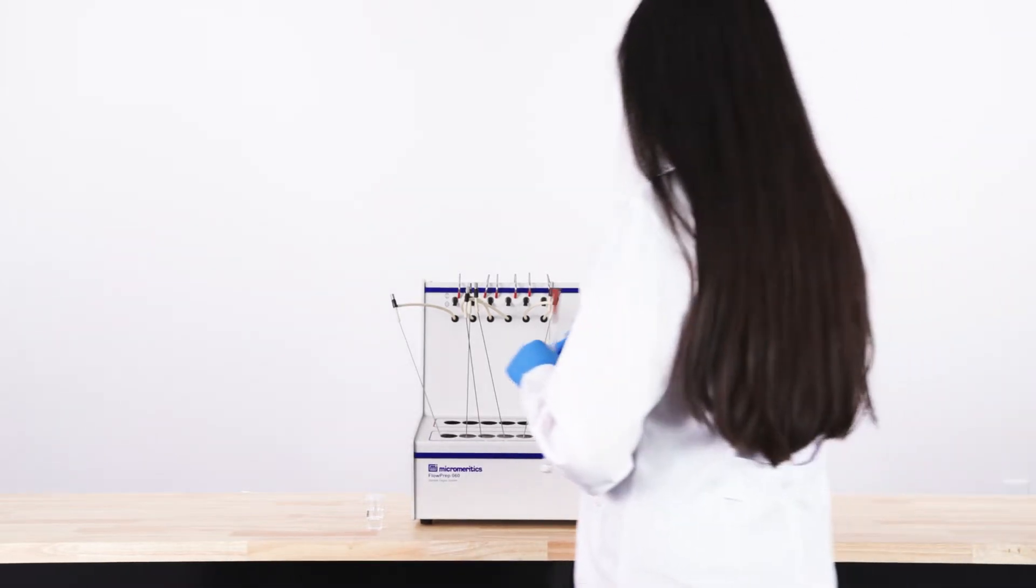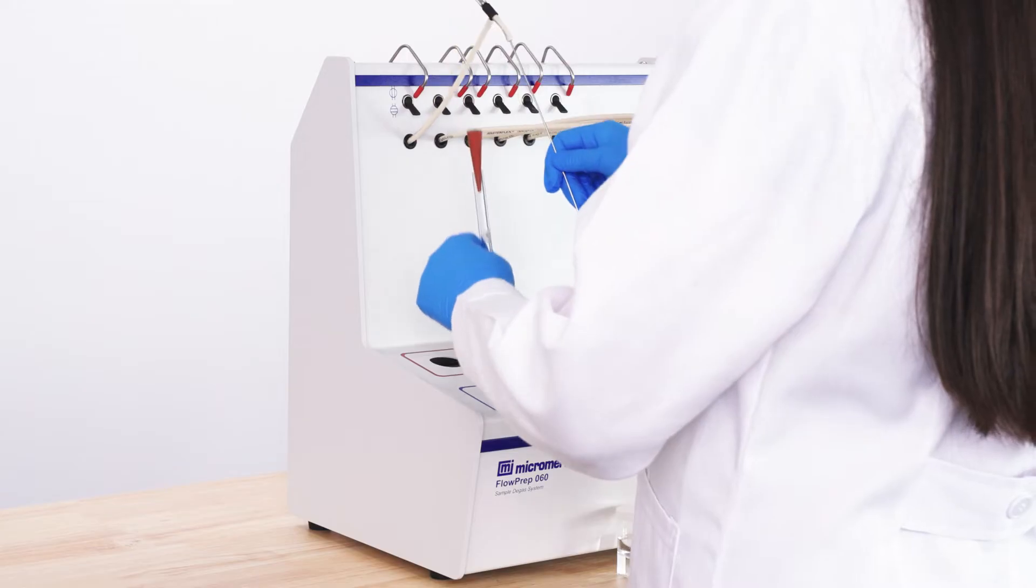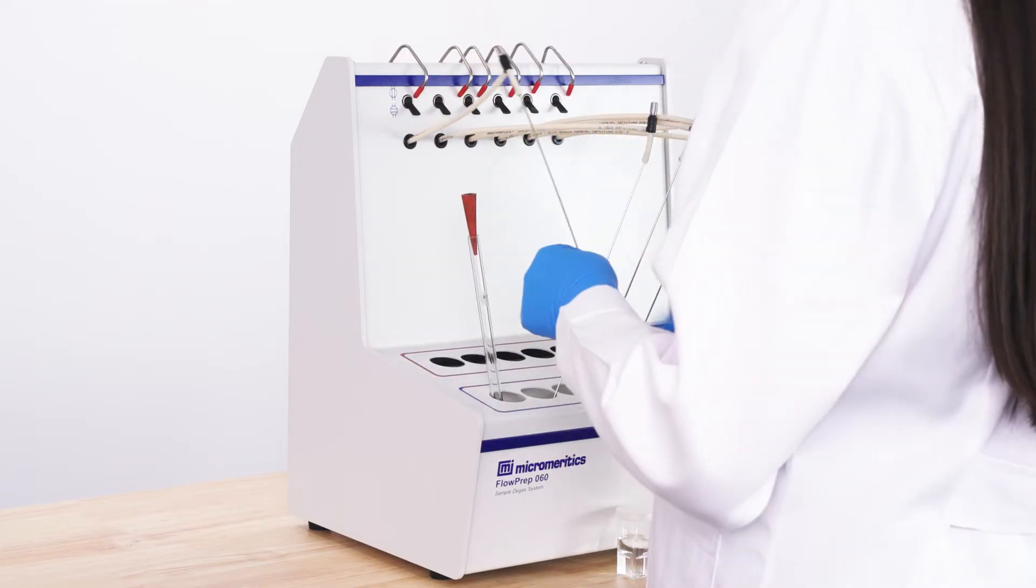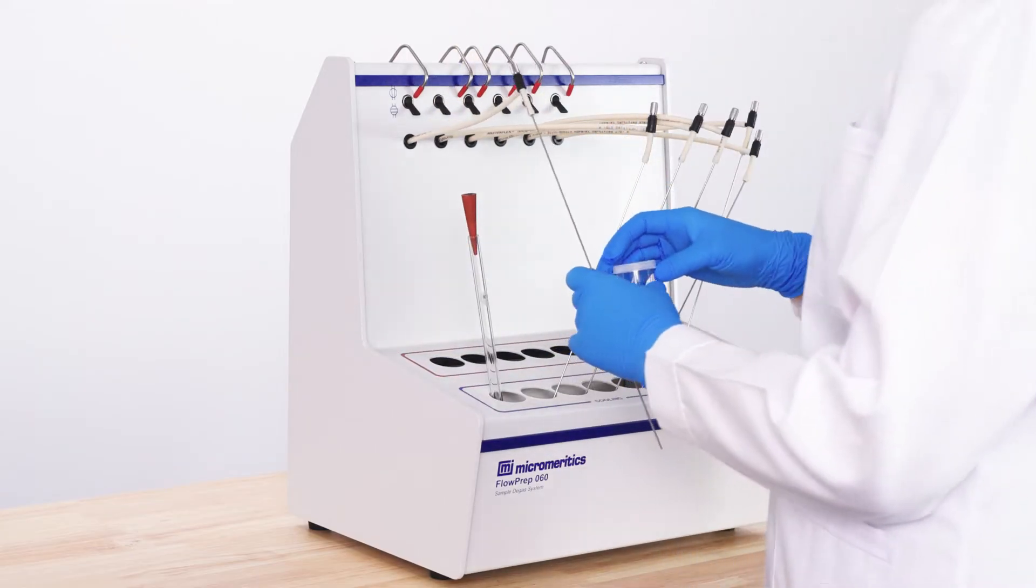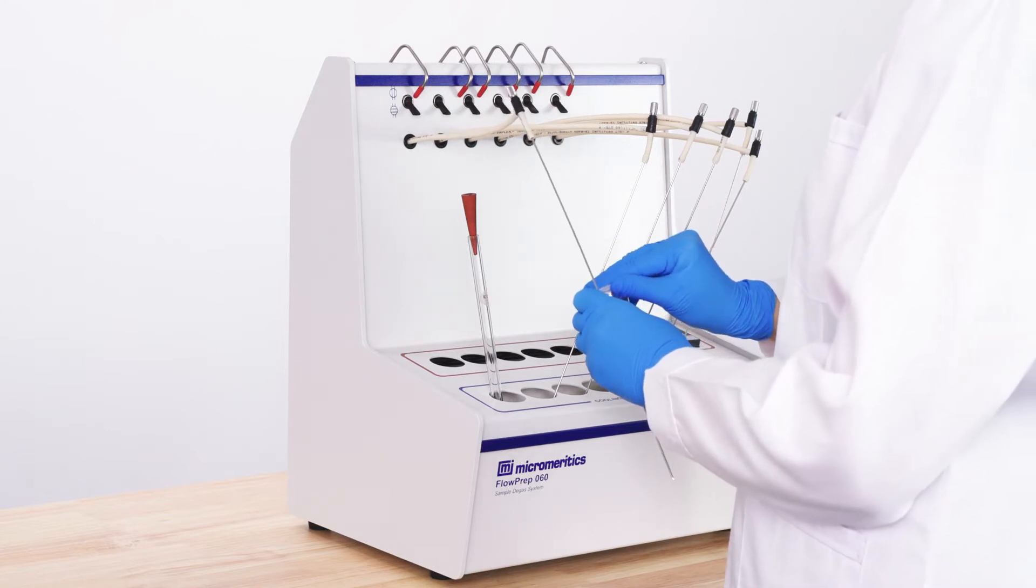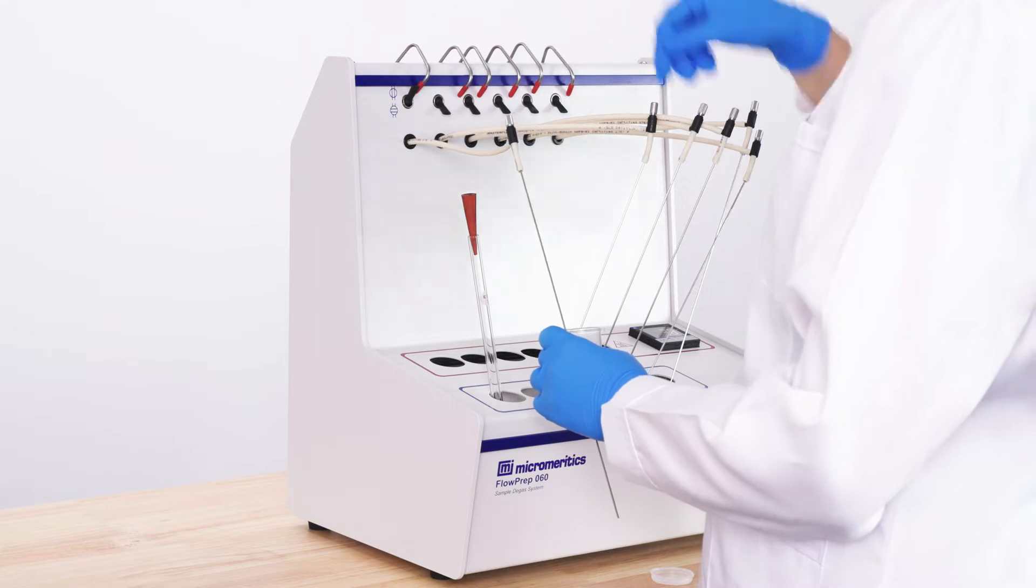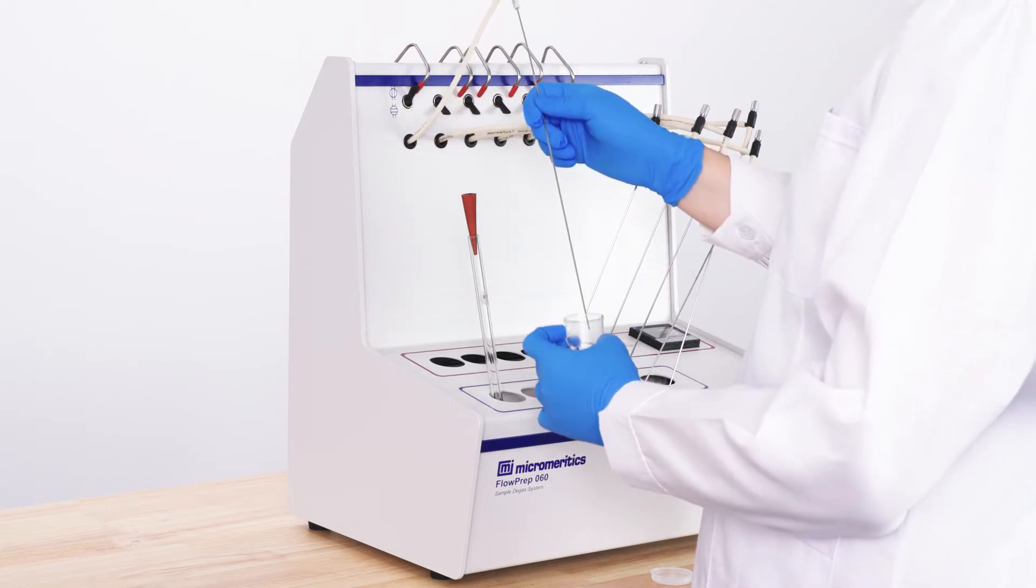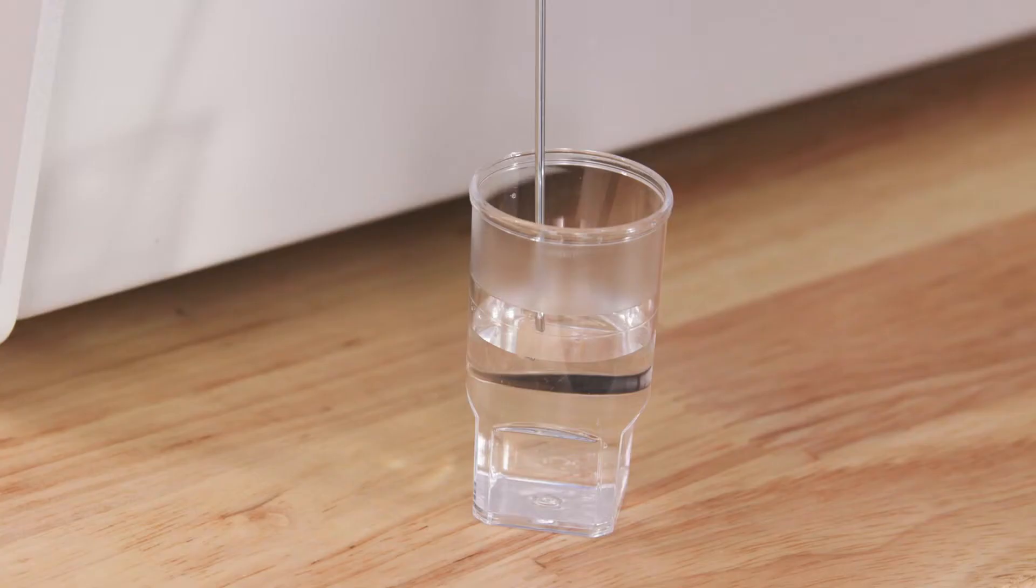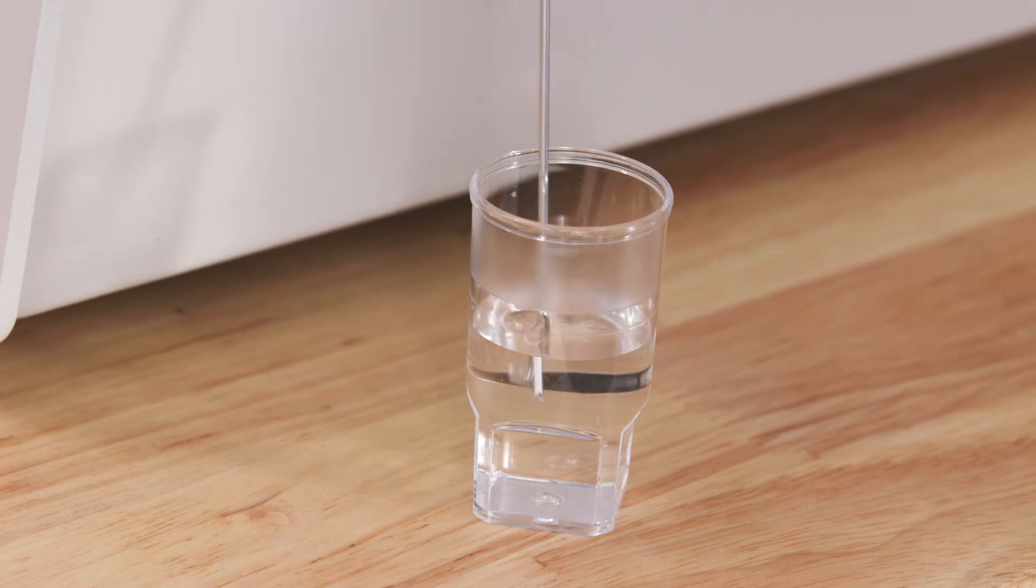On the FlowPrep, set the sample tube in the cooling station and turn on the gas. Immerse the tip of the gas delivery tube in water to check the flow of nitrogen gas. Flip the switch at the top of the instrument upwards to allow gas to flow. Bubbles should rise from the gas delivery tube in the water indicating that gas is flowing.